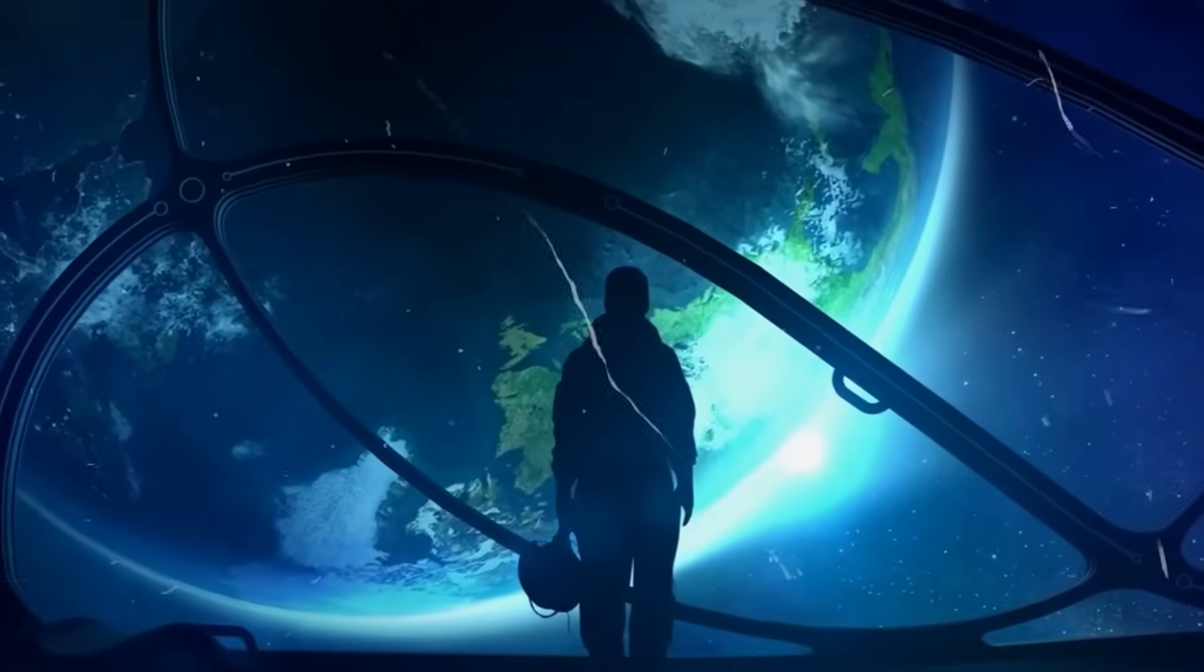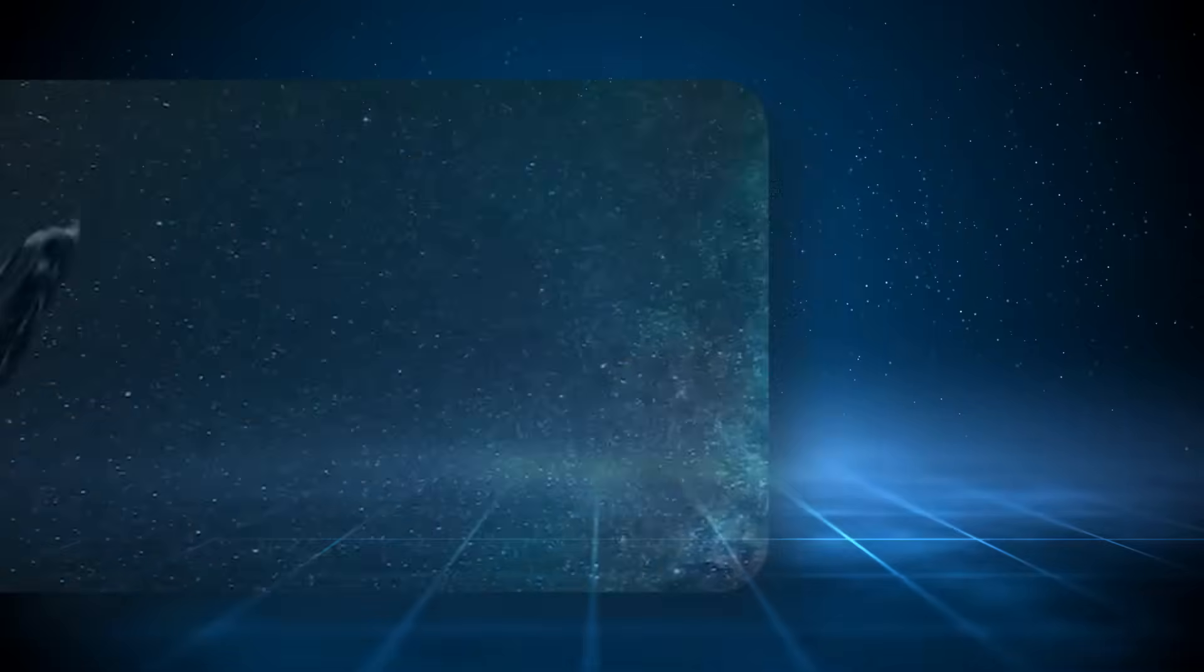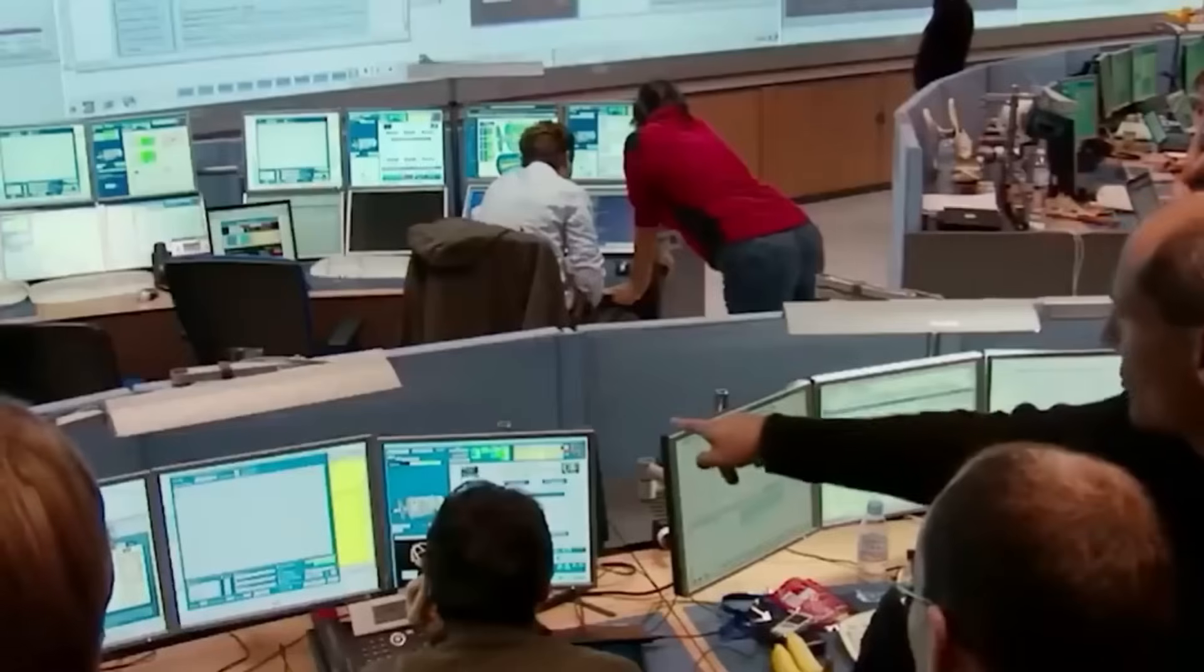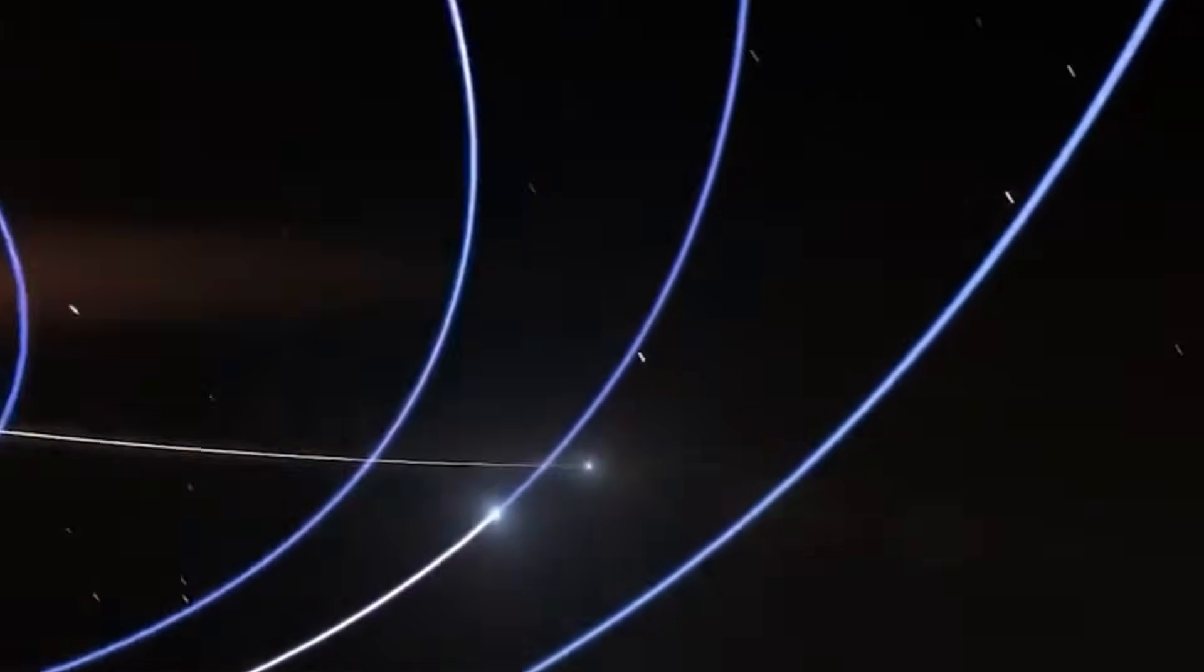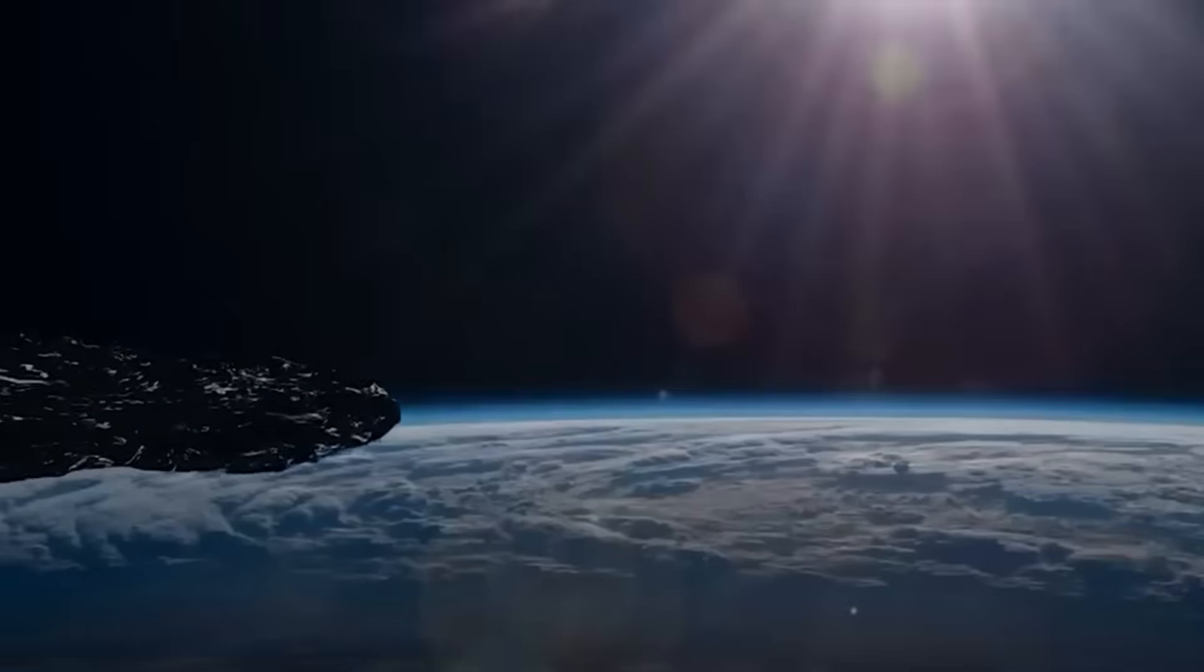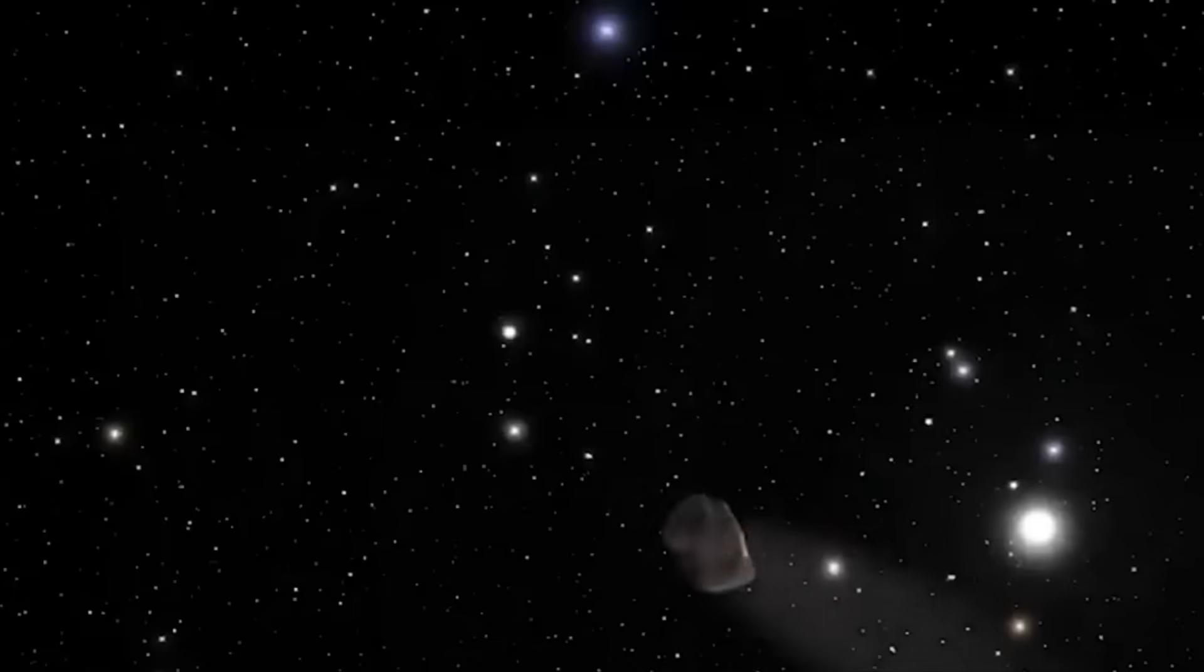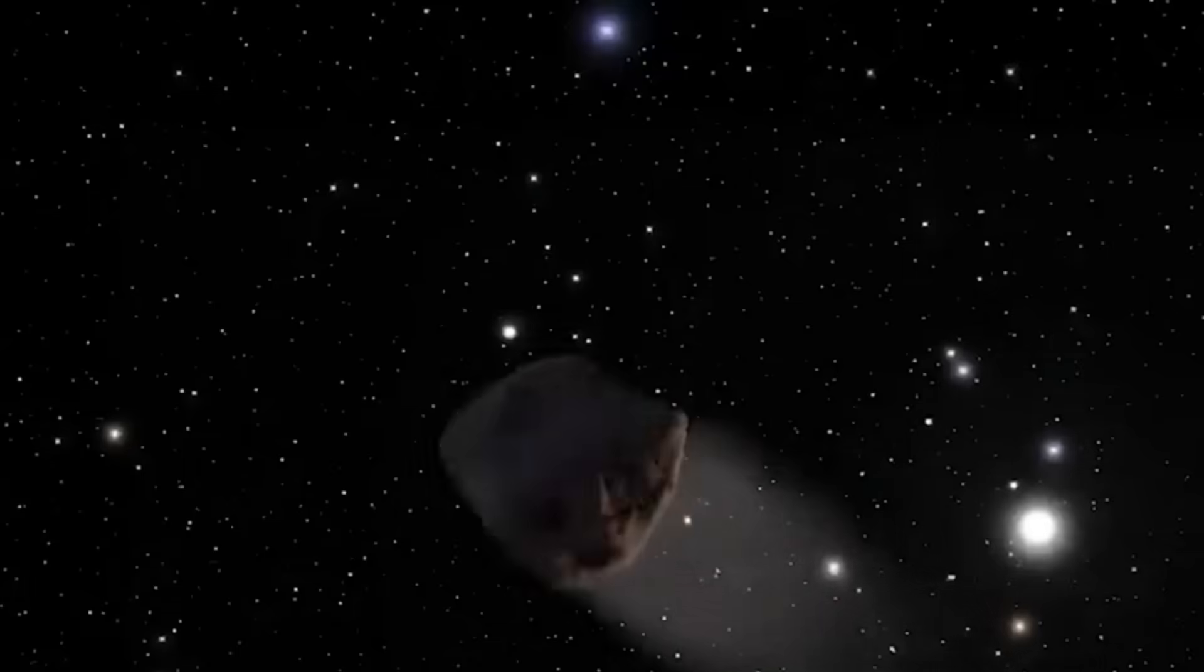This return of Oumuamua and its companions also raises historical questions. Have such objects visited Earth before, unnoticed or misidentified? Ancient texts and oral traditions often describe chariots in the sky or stars that moved against the heavens. Could these be distant echoes of earlier encounters with similar phenomena?